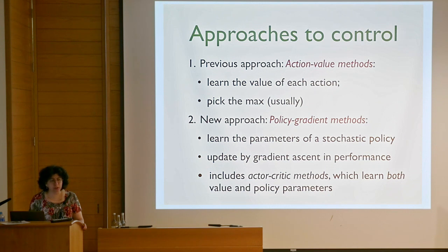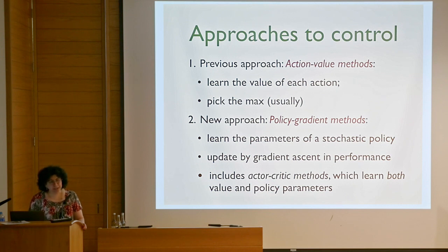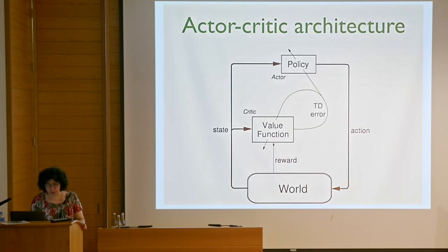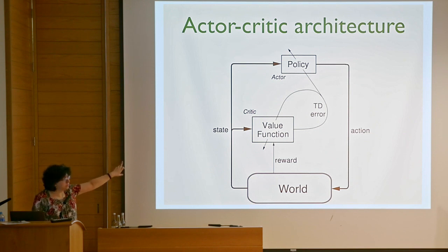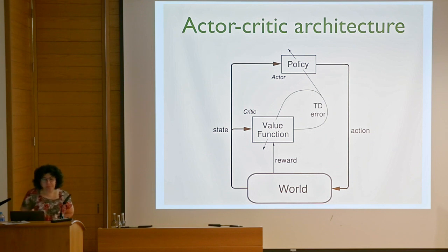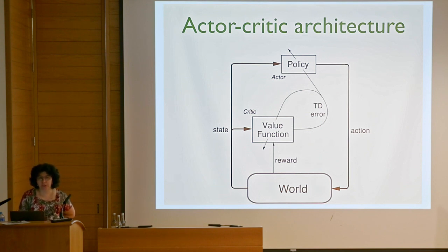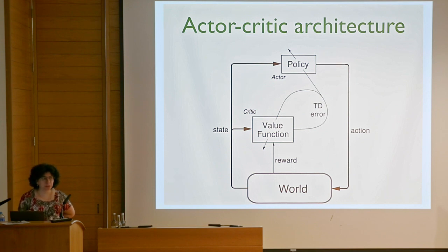Policy gradient methods focus on and parameterize the policy directly. The policy is assumed to be stochastic because we need to get data everywhere, and we do gradients to update these parameters. Sometimes we use the value function as an indication of where to go. The kind of method I like best is the actor-critic architecture, where the actor is the policy and you have an estimate of the value function that guides the direction in which the policy changes.